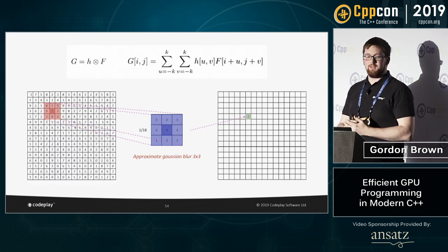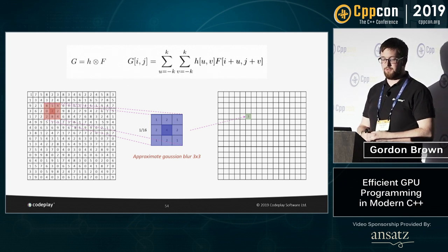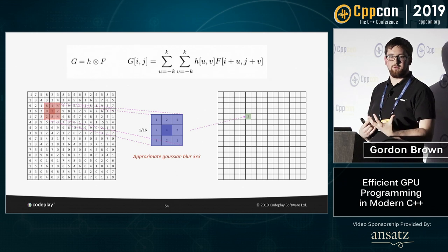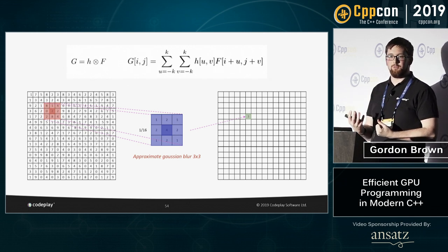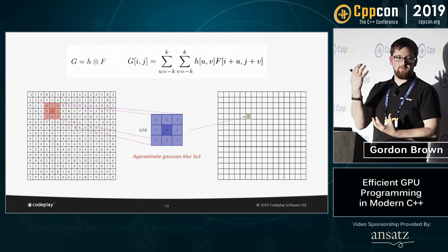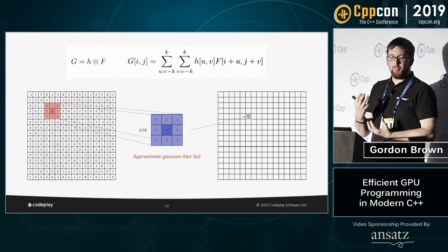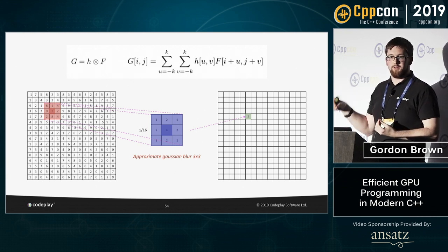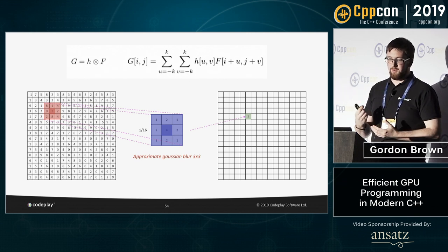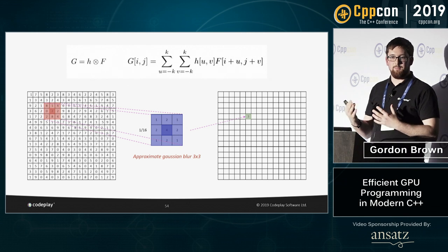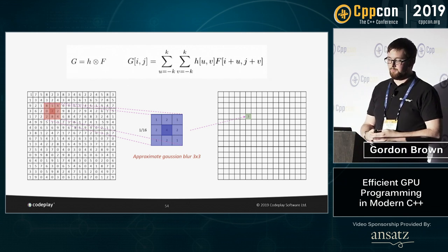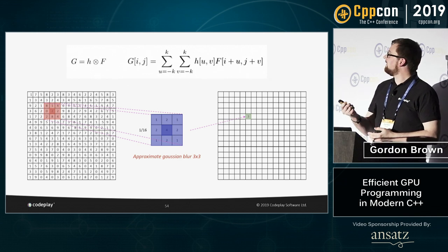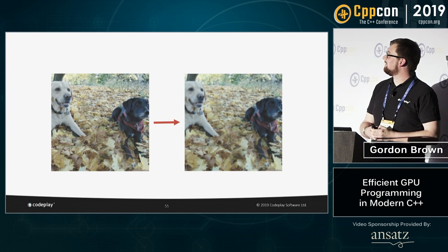Briefly, how image convolution works: you have an input matrix and a filter matrix — here a 3×3 that can be much larger. You position the filter over every item in the input, and the result for that input is the sum of multiplying every element and its neighbors with the corresponding filter element — multiply all together and add them. For image convolution you generally normalize these to maintain consistent brightness. This 3×3 shown is an approximation of a Gaussian blur — here's an example blurring a picture of my dogs.